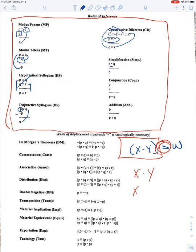Conjunction, whenever you have anything on a line and another line, you can conjunct them and the main operator must be a dot. And addition, you can add anything you want, but be certain it's actually a wedge. Okay, so that's just a little bit of review real fast.